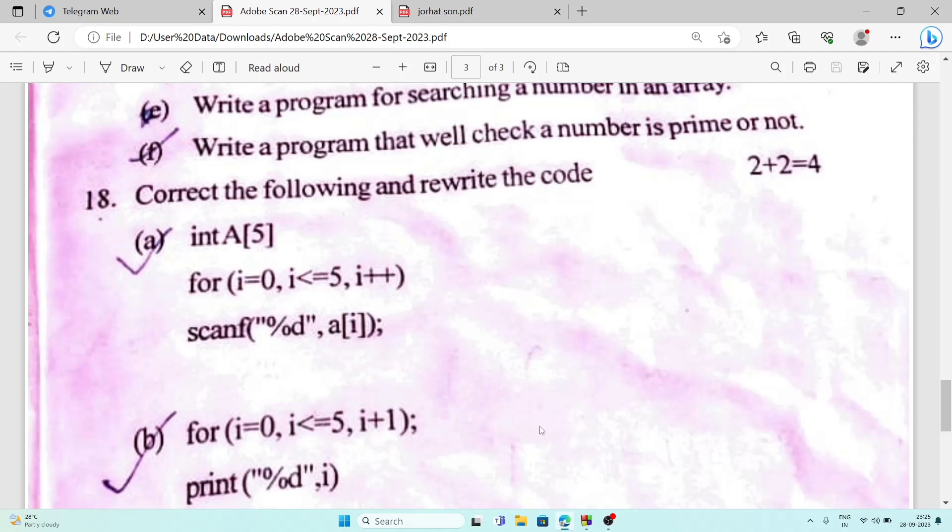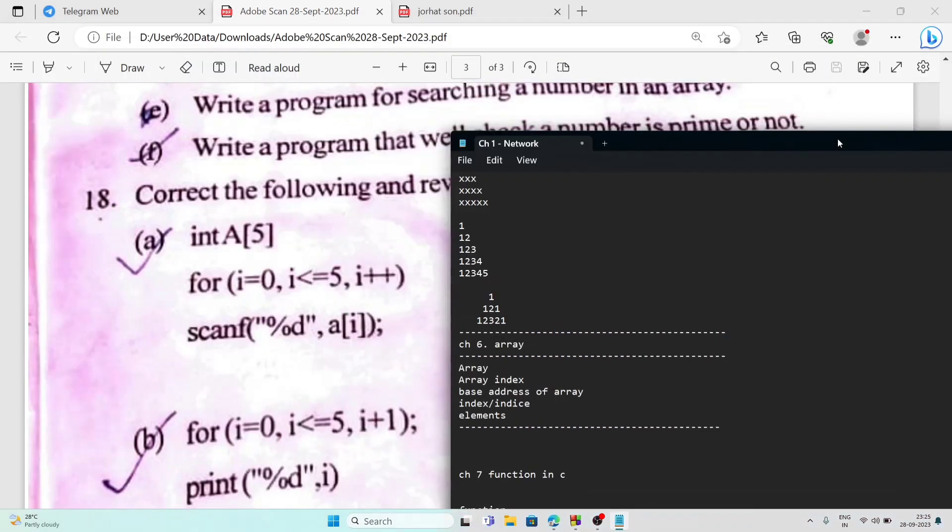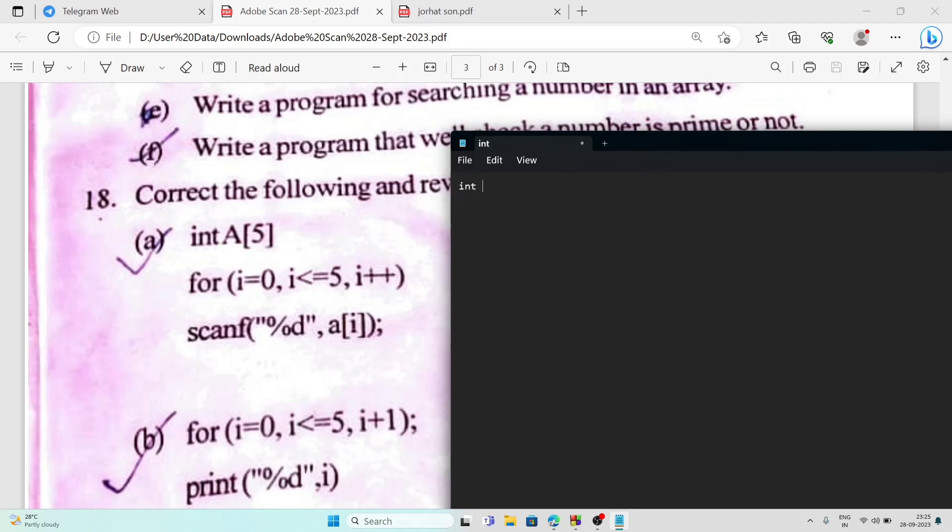I am writing the code here. You can see, I am opening notepad. It should be int a[5] semicolon, for i=0, i<5, i++, then here scanf and here comes %d and ampersand a[i]. So this will be the correct code.